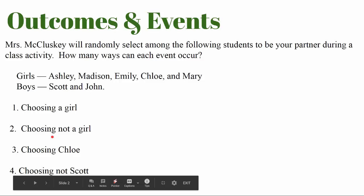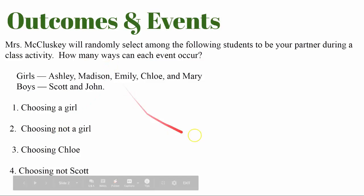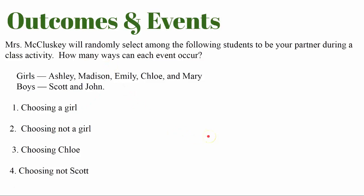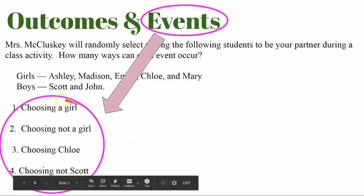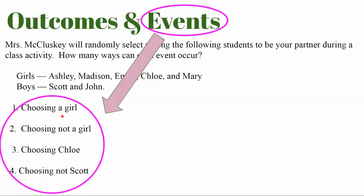First, let's review outcomes and events. Mrs. McCluskey will randomly select among the following students to be your partner during a class activity. How many ways can each event occur? Let's review the vocabulary. Events — these are the events. Choosing a girl is the event.